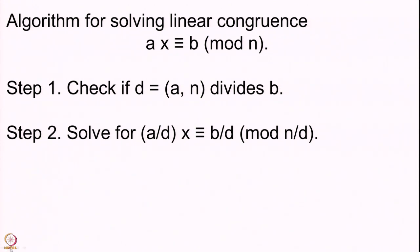However, if the GCD does divide b — meaning d divides all of a, n, and b — then we go to the next step, which is to cancel d from all these numbers. So here we have a/d, b/d, and n/d. We cancel d from all three numbers and obtain a congruence for which the coefficient of x is smaller. Ultimately what we want to do is cancel this coefficient of x to make it 1, which would give x congruent to b mod n as the solution.